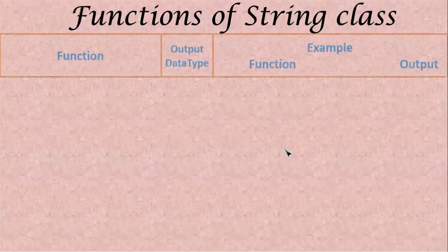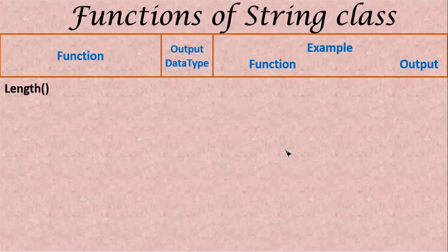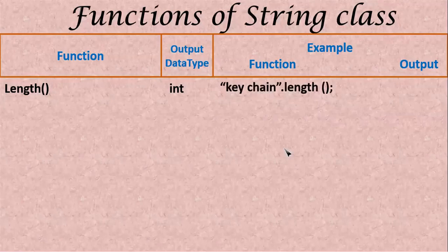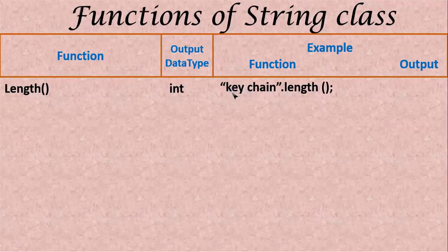In Java there are many functions for strings. Let us see them one by one. The function length() — the output data type is always integer. The length() function says how many characters are available in the string, including special characters and spaces. For example, "key chain" with a space between key and chain — dot length() will count all characters: k-e-y-space-c-h-a-i-n, so 9 will be the output.